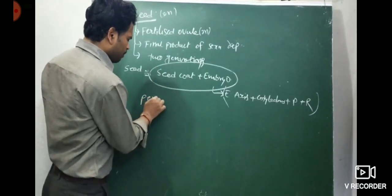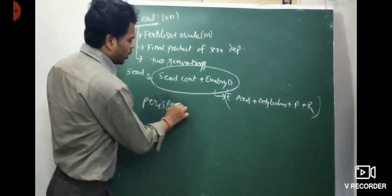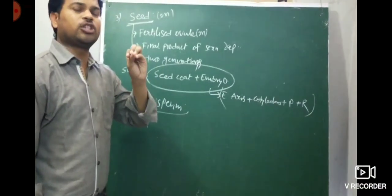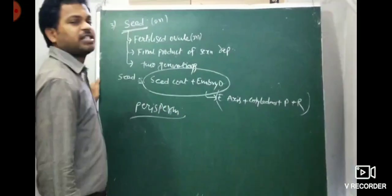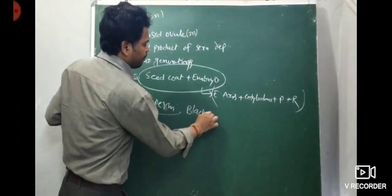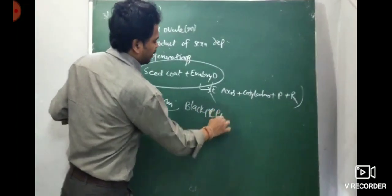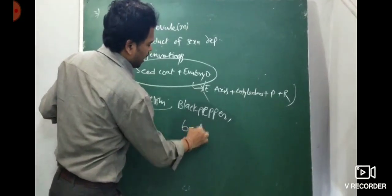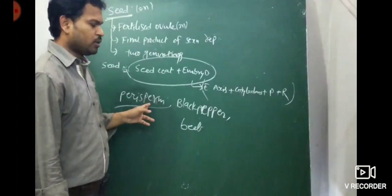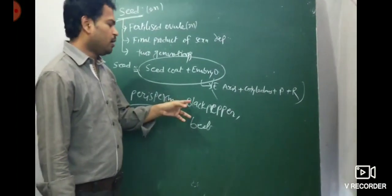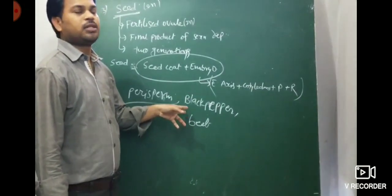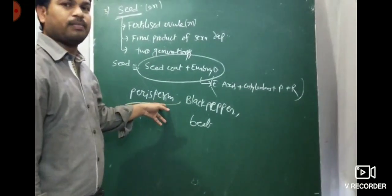Next, perisperm. Perisperm means persistent nucellus — the nucellus that remains after seed development. Persistent nucellus is called perisperm. Examples: black pepper and beet. A theory question may ask: define perisperm and give examples.